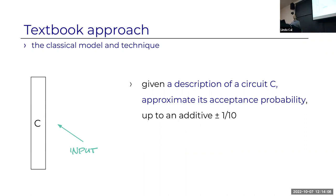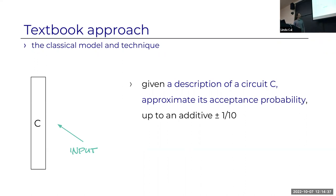How do we do derandomization in complexity textbooks? We start with a complete problem: given a circuit C with one output bit, approximate its acceptance probability up to some small additive error. Of course we could just sample inputs randomly, but we want to do it deterministically—that's the challenge we're trying to solve.